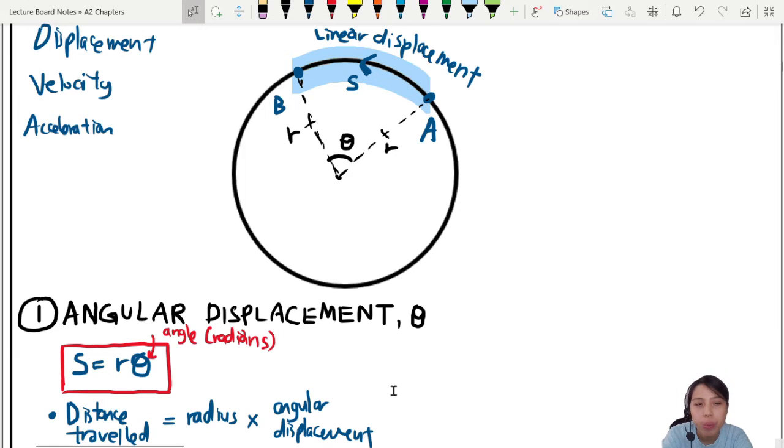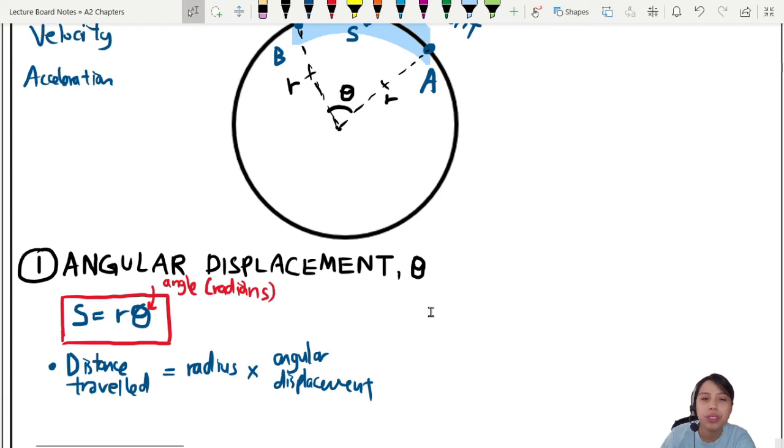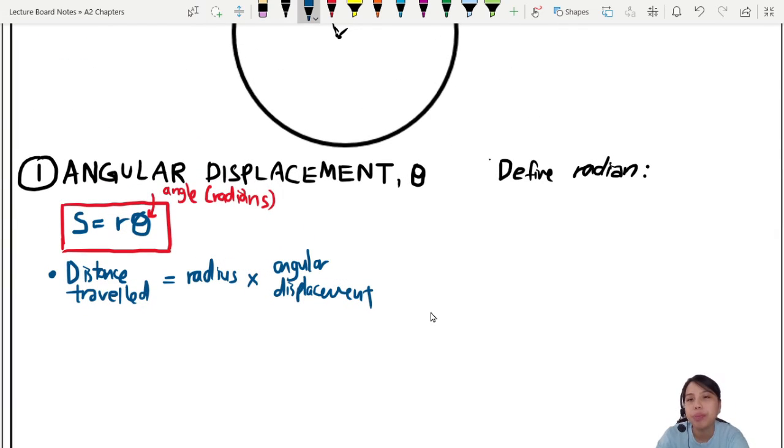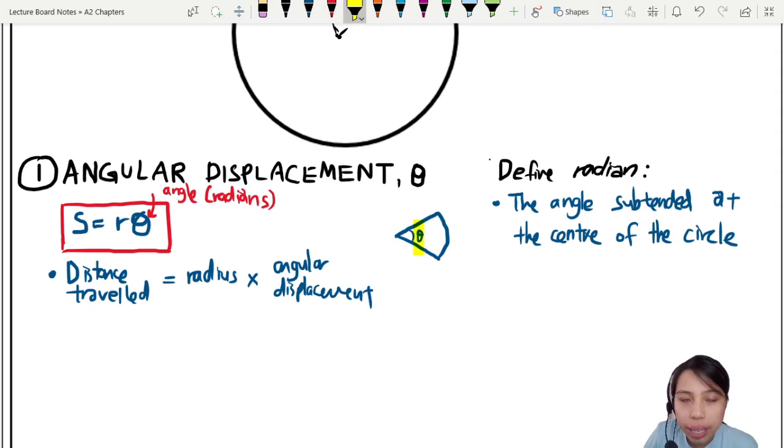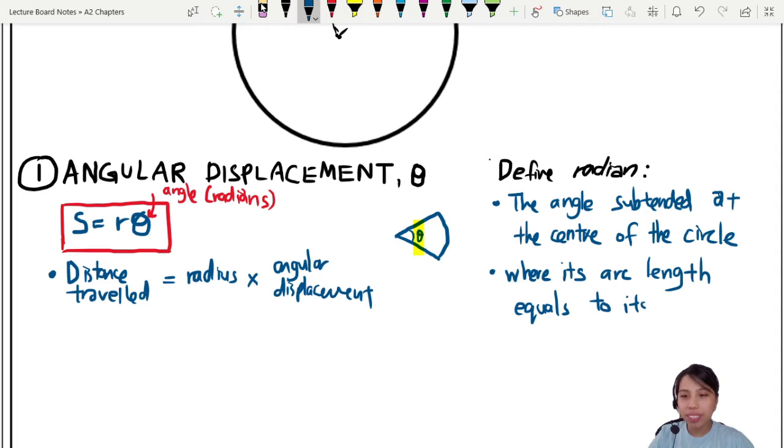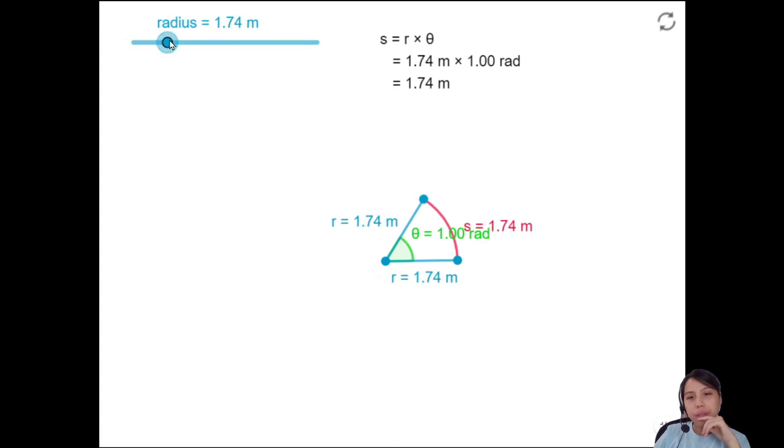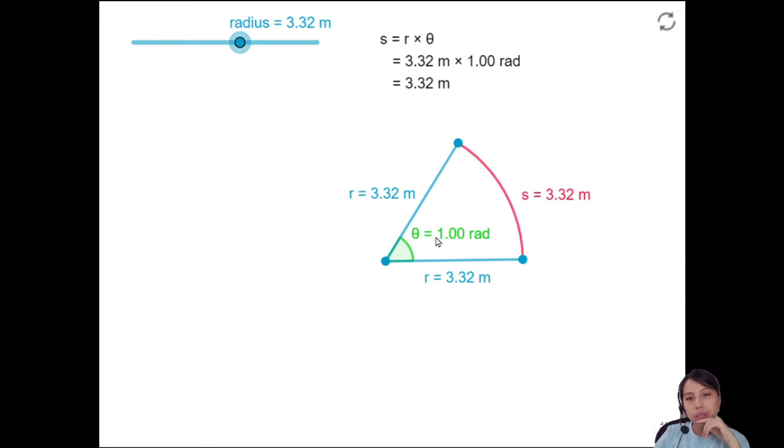Before I move on, there's one definition that you need to know, which is what is radians? We need to define radian. We can say radian is, if you think of a pizza slice, there's a very specific definition. Radian can be defined as the angle subtended at the center of the circle where its arc length equals to its radius. So you look at the pizza on the left side. This radius r must be the same as this arc length s. So it's kind of like saying if radius is 1, then the arc length must be 1. That is 1 radian.